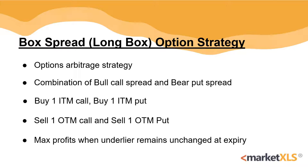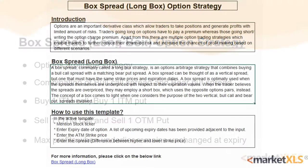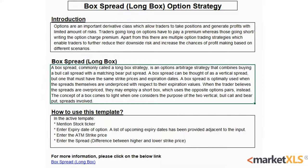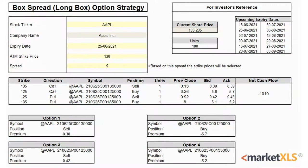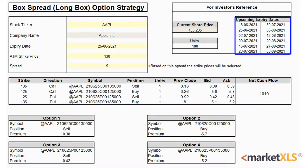MarketXLS offers a template for this strategy. Here is an introduction page for users to read, and here is the active template. The yellow cells have to be inputted by the user: the stock ticker, expiry date, the at-the-money strike price, and the spread. Some upcoming expiry dates are available for reference on the right.